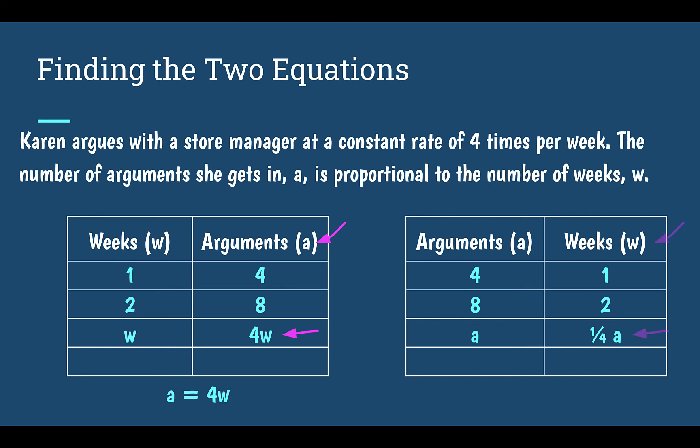Just like before, I'm looking at my variables, so the number of weeks, W, must be equal to the number of arguments times one fourth. So our equation would be W equals one fourth A.